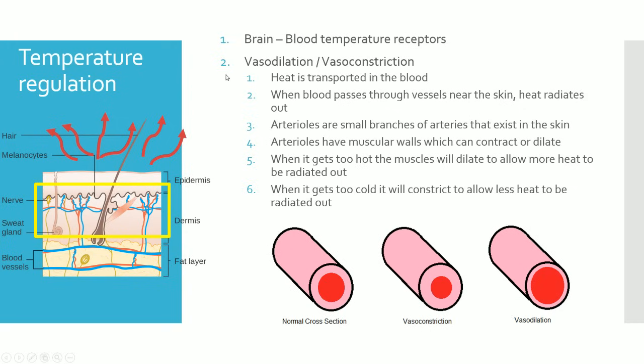For temperature regulation, our brain has blood temperature receptors. When our blood gets too cold, the brain coordinates a response to increase blood temperature; if it's too hot, it coordinates a response to lower it. Heat is transported in the blood and gets passed out through the top of the skin via the arterioles that travel close by.